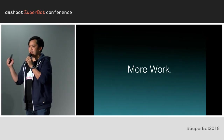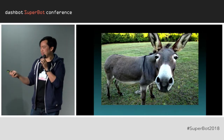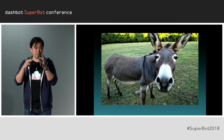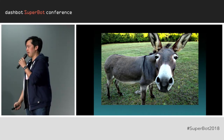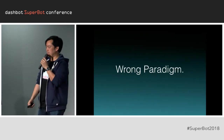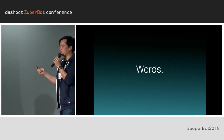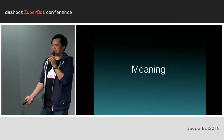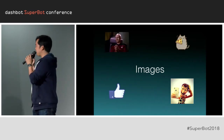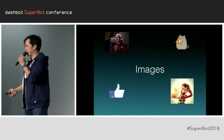And we learned that traditional analytics just don't work well for conversations. It's more work hooking up the events — a really big pain having to instrument every single little thing within your conversation. And honestly, it's the wrong paradigm. We're missing the conversation because words have meaning. You're missing that. Images being sent to your bot have meaning.